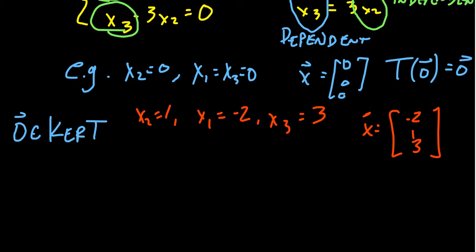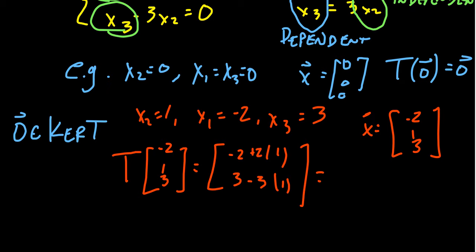And let's verify this. If you take T of negative two, one and three, you're going to end up with the following. Take the first component times two, add to that two times the second component. And then take three, the third component, minus three times the second component. And what do we get there? We end up with negative two plus two. That's a zero. You get three minus three, which is a zero. This is the zero vector. So this shows us that in this situation, negative two, one, three is likewise inside of the kernel of T.